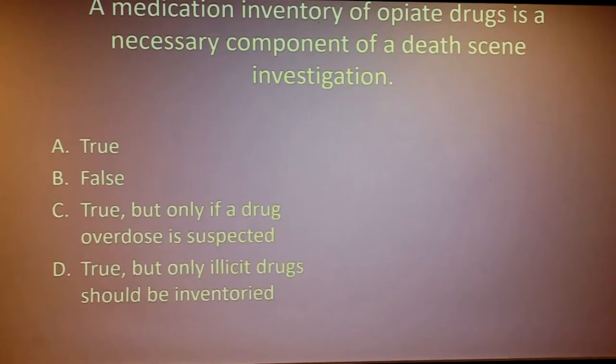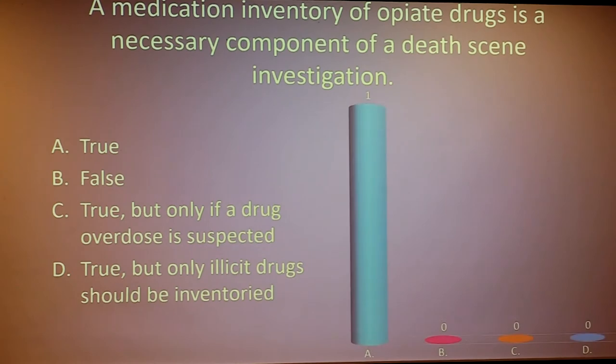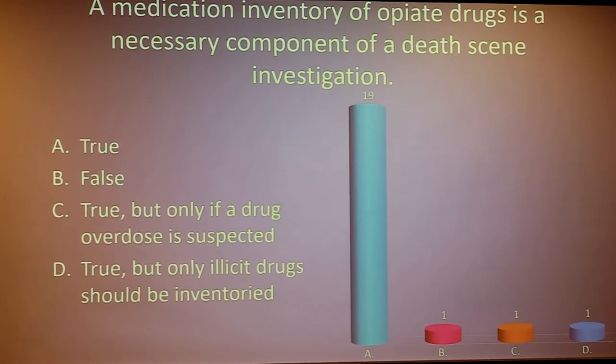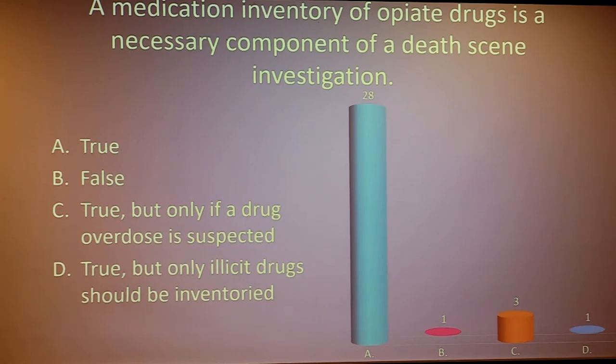A medication inventory of at least opiate drugs should be part of a complete death scene investigation — true. Take pictures of pill bottles, count the pills, do an inventory of what's there. When asking about tolerance, this is where we get our information. It's not enough to photograph the outside of the bottle — look inside, because just because it says Xanax on the outside doesn't mean it's Xanax on the inside. Suspicious signs: no label, mixed pills, multiple prescriptions for different people.